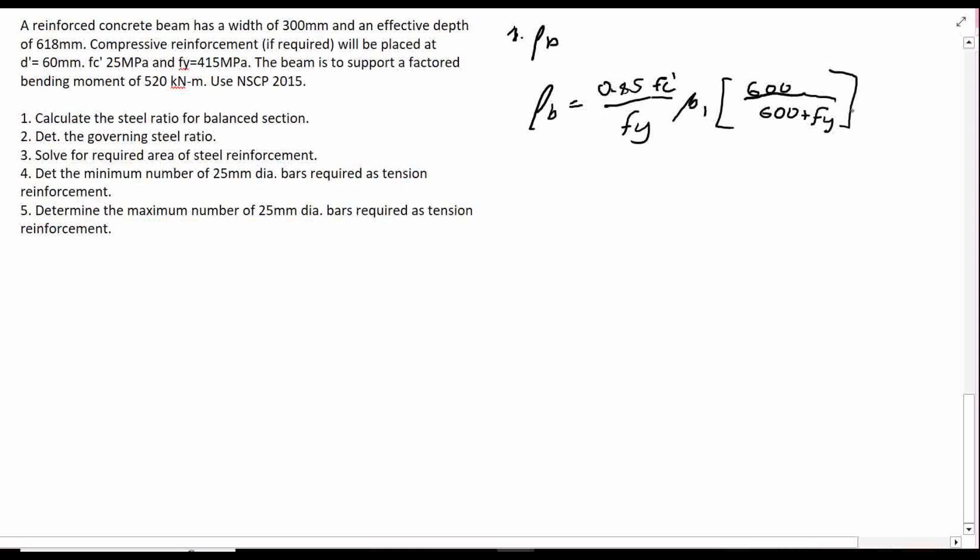For our beta 1, these parameters are known for balance section. We used the F'Y 415, so we'll be solving for β1. β1 is, since F'C is 25 MPa, so it is less than 28, therefore our beta 1 is 0.85. So ρ_balance is now 0.85 times 25 all over 415 times 0.85 times 600 over 600 plus 415. Our ρ_balance is 0.025728.